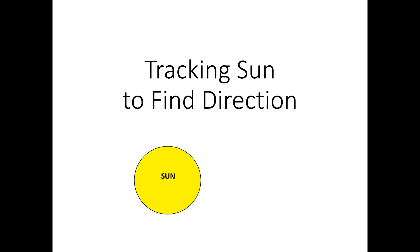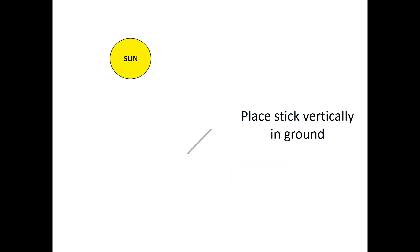The first technique that I'll demonstrate is what I call my sun tracking method. I'll demonstrate first with a graphic representation of the steps involved, and then I'll show the technique being used a couple of times in the field. You begin by placing a stick vertically in the ground and marking the top end of its shadow.